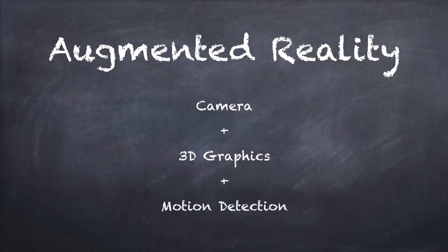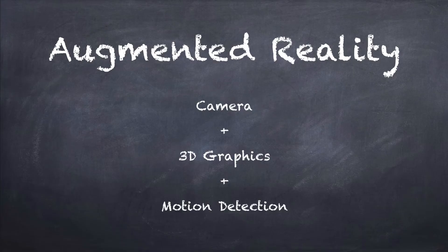There's a third element to it — it's not just static, it's actually live. There's motion detection. As you move your phone and thus the camera and viewpoint, the objects will react to that. So it's not just taking a static image of a table and putting a chess board on it — it's taking a live image, and as you move the camera around the object seems to remain in the same place.